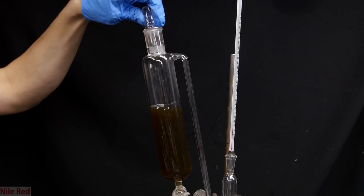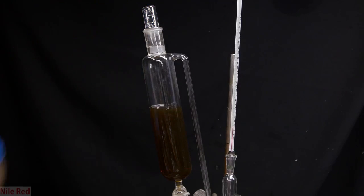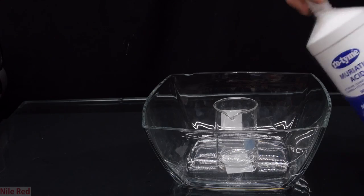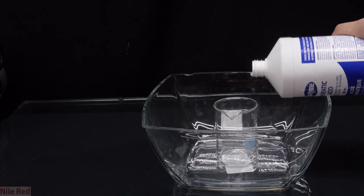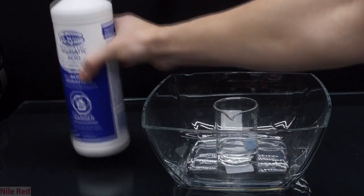So with that being said, I'm going to get started and we'll start with muriatic acid, also known as hydrochloric acid. So here we have some 31.45% hydrochloric acid that I bought from the store. To start off, I pour a little bit into a beaker.